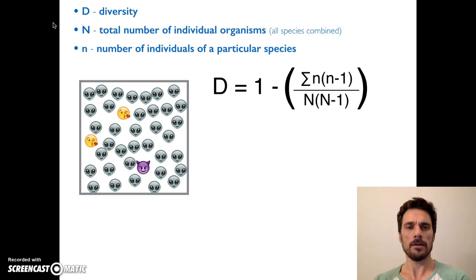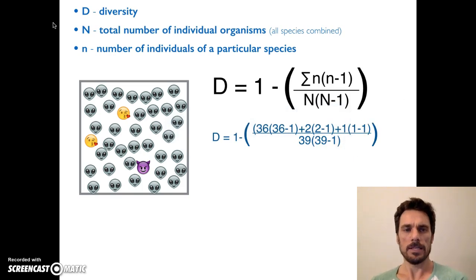Let's move on here. We'll calculate the one with all the alien faces first. Just going through the equation, you'll see that I have 36 alien faces, and so 36 times itself—another lowercase n, 36 times 36 minus 1. I'll explain the minus 1 in a second. Then we go to the next face, the next one with the two yellow faces, so 2 times itself, 2 minus 1. And then we go to the next face, the purple, which is 1, 1 times itself minus 1.